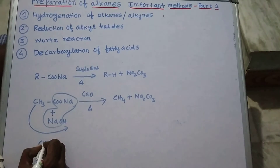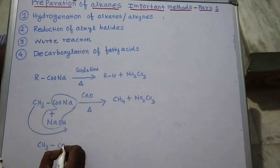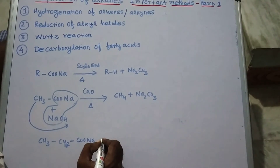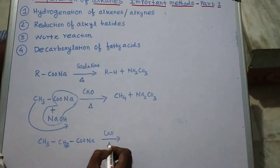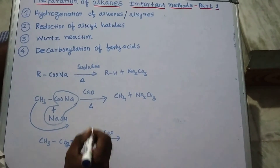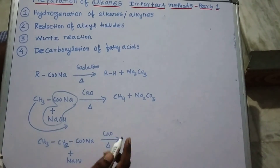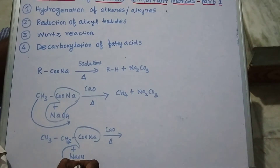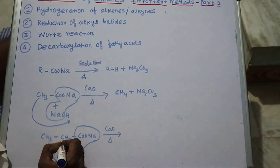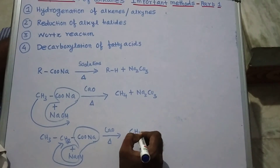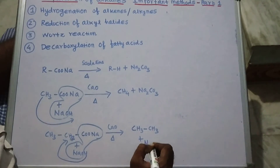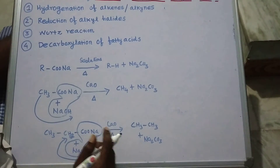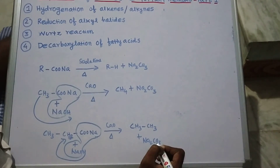Another example: CH3-CH2-CH2-COONa, sodium propanoate, in the presence of calcium oxide with sodium hydroxide — the mixture of calcium oxide and sodium hydroxide is called soda lime. On heating, this is going to be eliminated, and we get CH3-CH3, which is ethane, with the elimination of sodium carbonate. This is sodium propanoate heated with soda lime giving ethane. That is the best part — see it, students. Thank you.